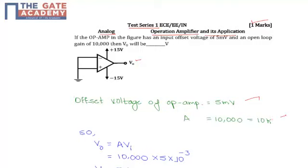We know that the input offset voltage is a parameter defining the differential DC voltage required between the inputs of an amplifier, especially an operational amplifier, to make the output zero.